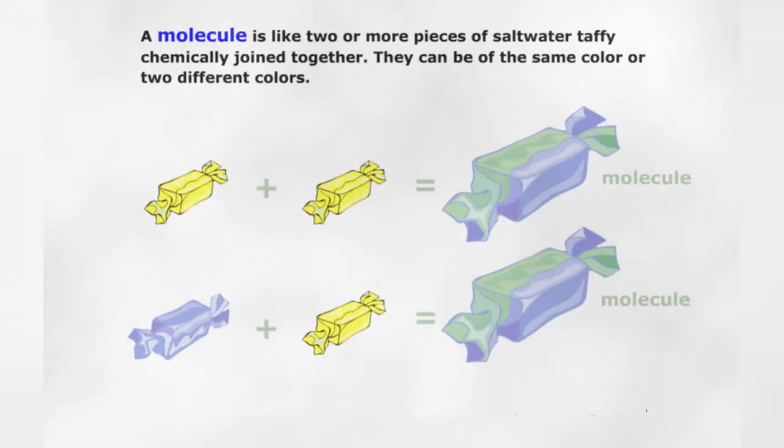A molecule is like two or more pieces of saltwater taffy chemically joined together. They can be of the same color or of two different colors. A molecule is two or more atoms chemically joined together.